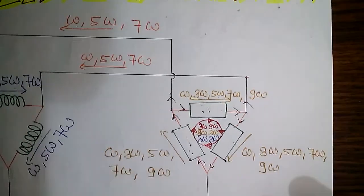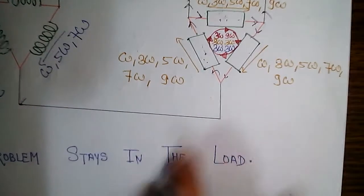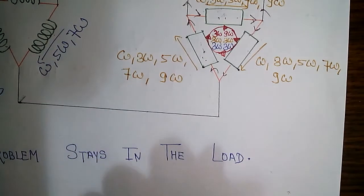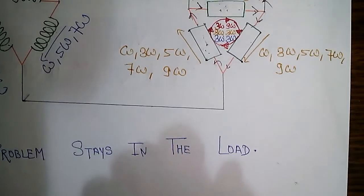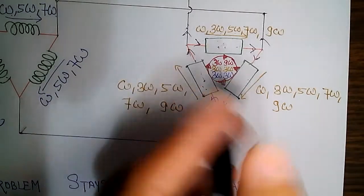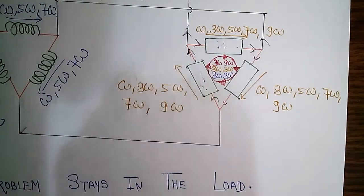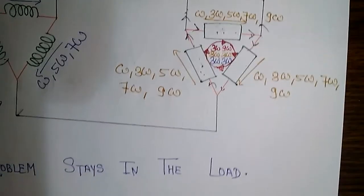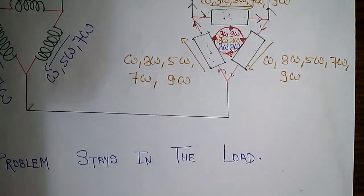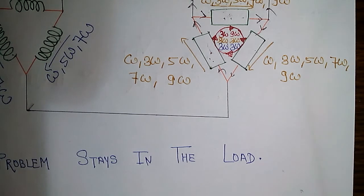Ultimately they will not cause any problem in the line — the problem due to third harmonics stays in the load. If you have a delta-connected transformer, it may heat up because the third harmonic current will be revolving in the windings only. So the problem stays in the load. I hope you got a better understanding of this. If you have any queries regarding harmonics please comment, and please subscribe to our channel and share our videos. Thank you so much.